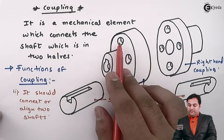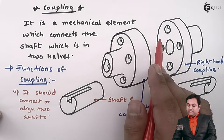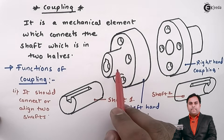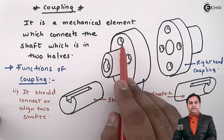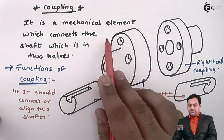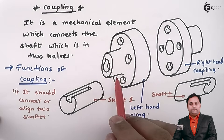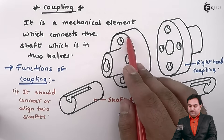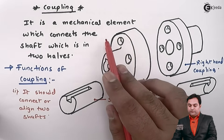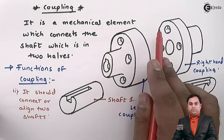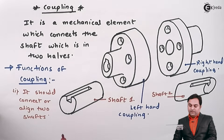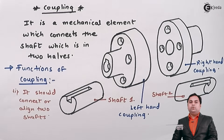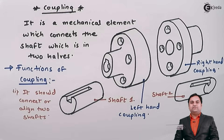Since there are bolts on the coupling, there are chances of the coupling hitting any other member operating close to it. For that purpose, we provide a protective cover over the coupling which hides the bolt heads. In this video we have seen what is a coupling and the functions of coupling.